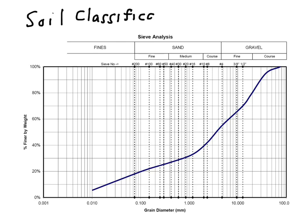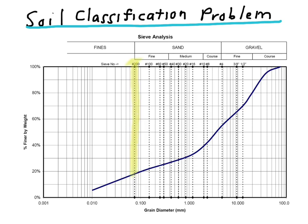The first step to the classification process is to determine whether or not we have a coarse-grain or a fine-grain soil. To do this, we examine the percent of soil passing the number 200 sieve, which is the dividing line between coarse and fine-grain soils. In this case, we have 18% of the soil passing the number 200 sieve. So clearly, this is a coarse-grain soil, which means it's either a sand or a gravel.